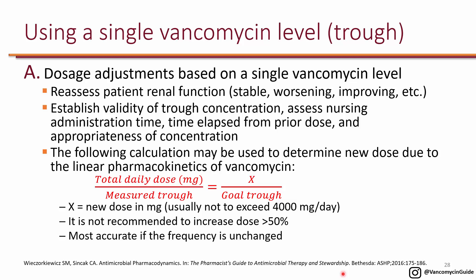Most hospitals in the U.S. get a single vancomycin level, typically a trough level. So first let's examine how to adjust the dose based on a single vancomycin level. Anytime you have a level back and you're about to assess the dose, first and foremost you need to reassess the patient's renal function to make sure it is stable, because depending on what happens with renal function, that could affect how you adjust the dose and frequency.